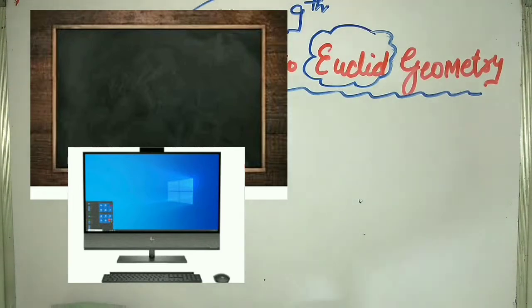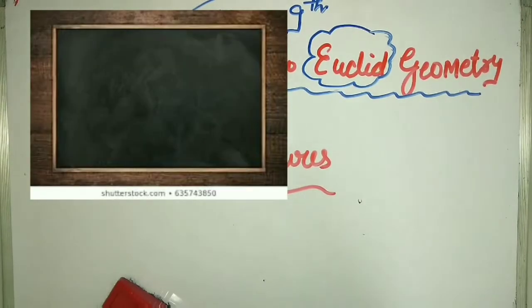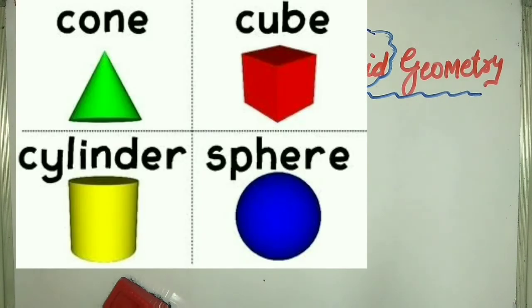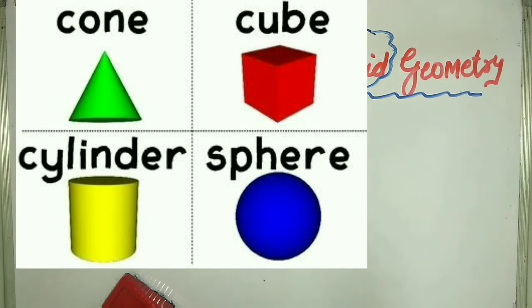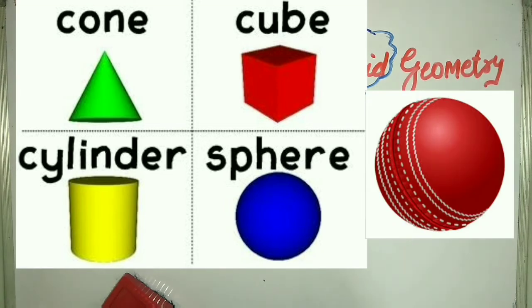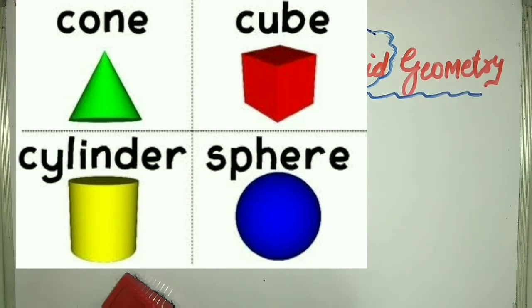Now, non-plane figures are those figures we can call 3D, 4D, or 5D figures, which can be seen from each angle. The best examples are your room, your classroom, your box, your geometry box, your tiffin box. Mathematically, the non-plane figures we study are cylinder, cone, sphere (you can say ball), and importantly, frustum cone. These figures we study in 9th as well as 10th.